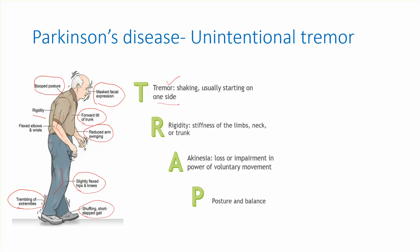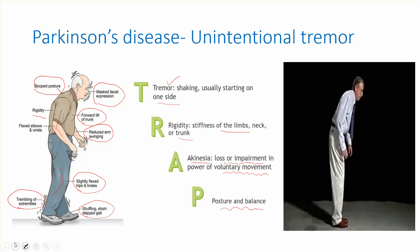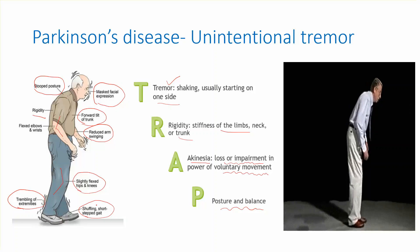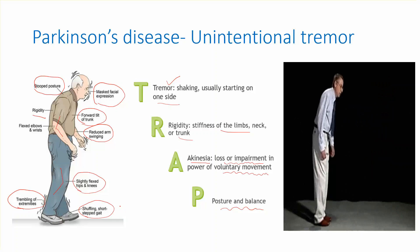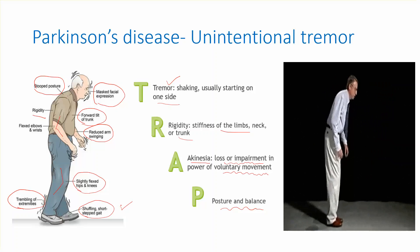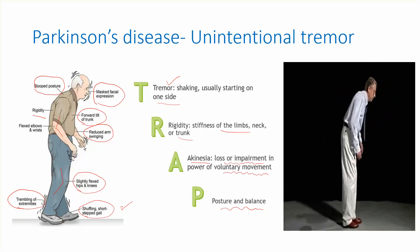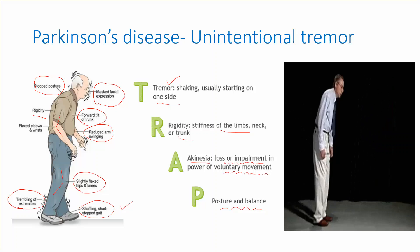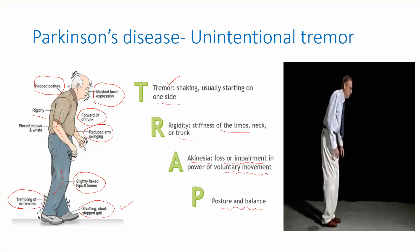The tremor is usually an unintentional type, starting from one side. There is rigidity and stiffness of the limbs, neck, or trunk. There is akinesia or bradykinesia — loss or impairment of voluntary movement. There is also difficulty with posture and balance, seen as a stooped posture. When walking, the patient has a festinating gait: short, shuffling, stepped — with no arm swinging and flexion of the elbows, hips, and knees.